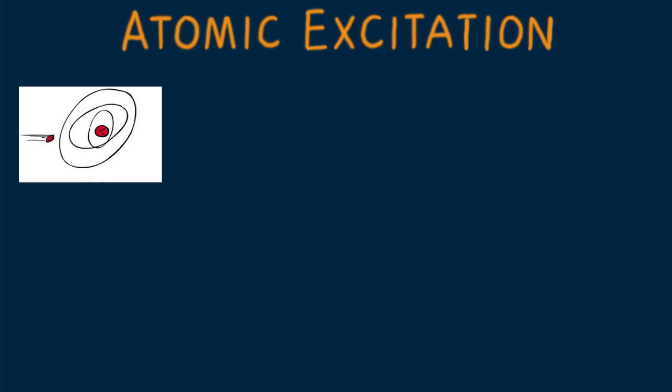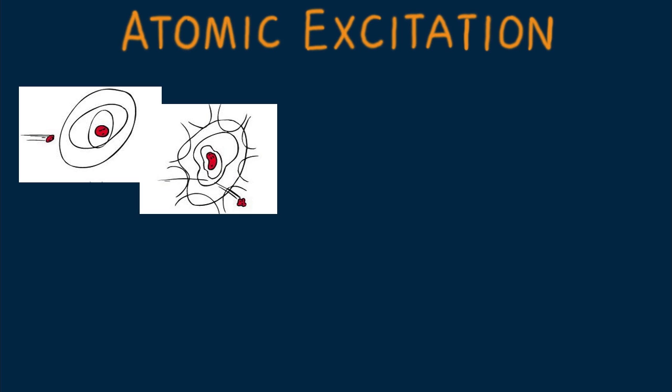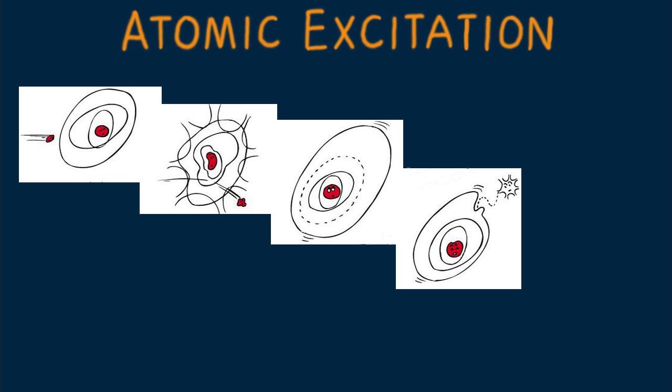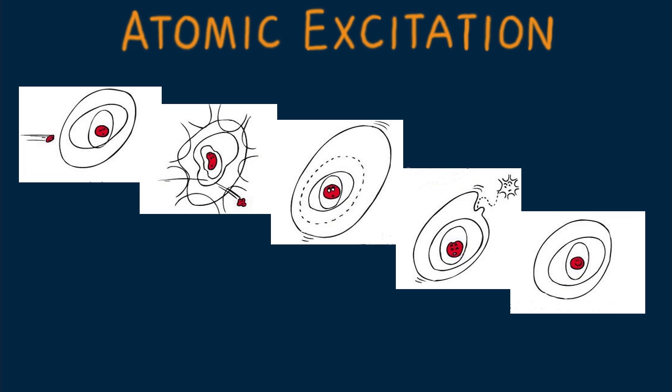Here's an atom being bombarded with a fast-moving particle. Energy is imparted to the atom, whereupon the atom becomes excited. The electron's higher position is only momentary. It soon returns to its lowest energy state, giving up its temporarily acquired energy by emitting radiant energy, a photon. The atom has undergone the process of excitation and de-excitation.